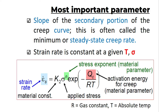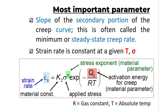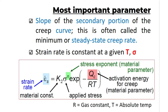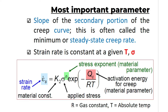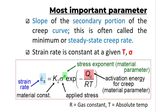The most important parameter for protecting material from creep failure is the slope of the secondary stage, also known as the steady-state creep rate. The strain rate is constant at a given temperature and stress. The formula to calculate strain rate is: ε̇ = K₂ · σⁿ · exp(−Q/RT), where K₂ is a material constant, σ is the applied stress, Q is the activation energy, R is the gas constant, and T is the absolute temperature.